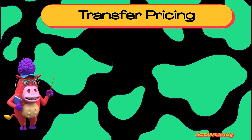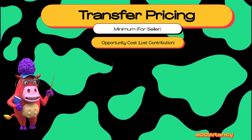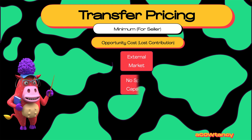So when do we use the opportunity cost? When do we calculate that lost contribution and include it? When there is an external market and we are working at full capacity — we've got no spare capacity. We are losing money from not selling to the external market and being forced to sell to our buying division.